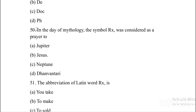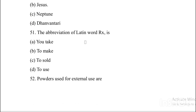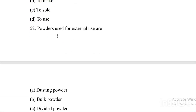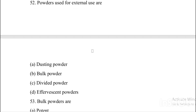Next question. In the days of mythology, the symbol Rx was considered as a prayer to — Option A: Jupiter. Option B: Jesus. Option C: Neptune. Option D: Dhanvantari. Answer is Option A, Jupiter. The abbreviation of Latin verb Rx means — Option A: You take. Option B: To make. Option C: To sell. Option D: To use. Answer is Option A, you take.